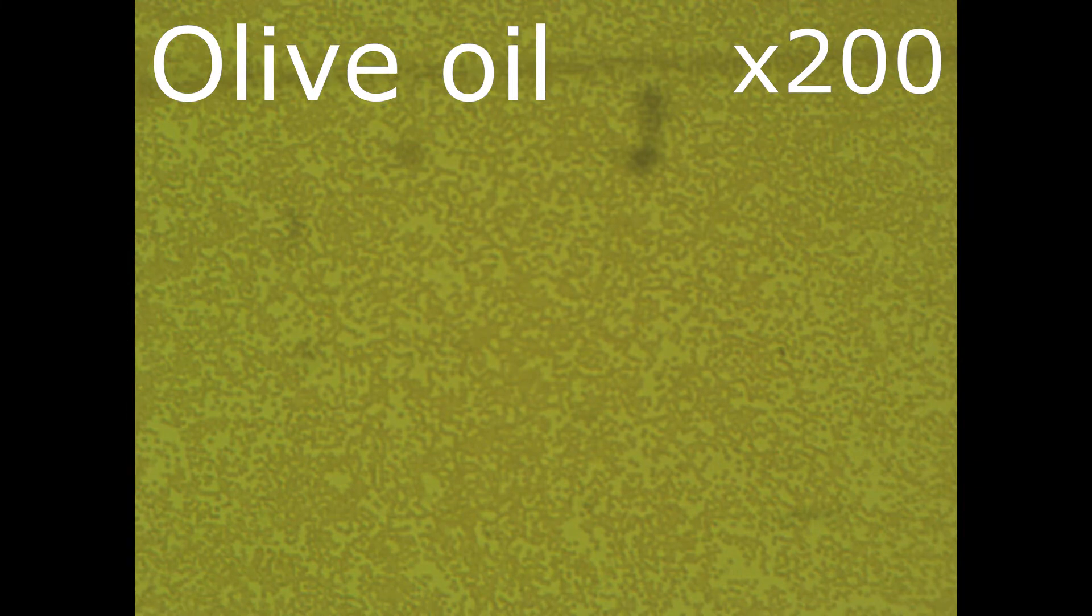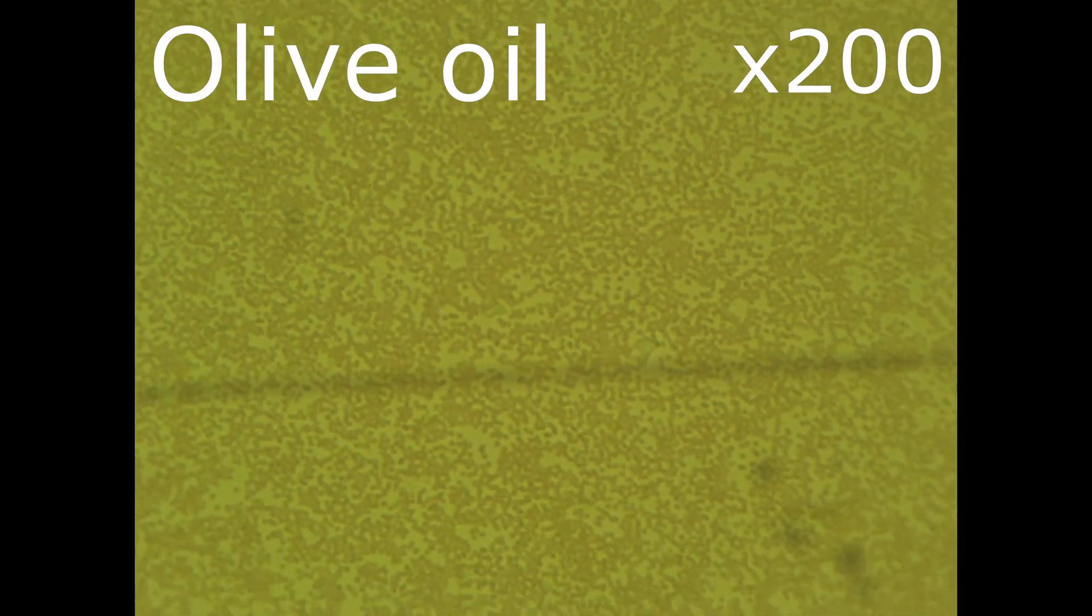What you see now is blood zoomed 200 times. At first sight there is no sign of improvements. We can notice bigger islands of grouped erythrocytes.